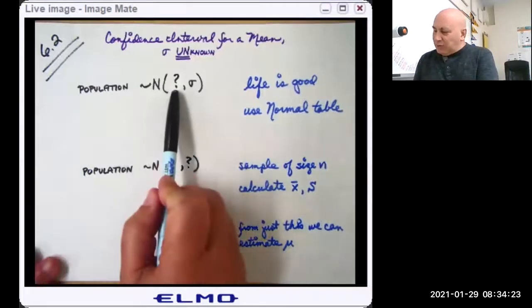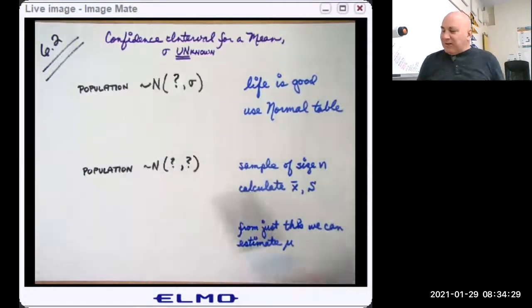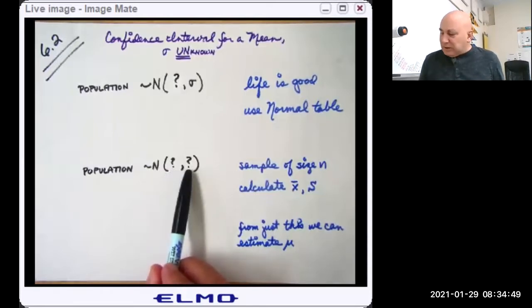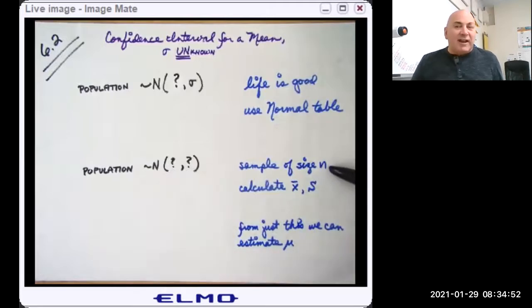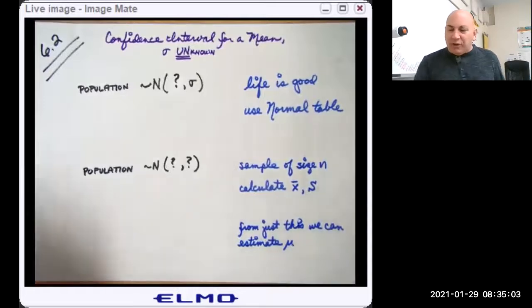Well, if you don't know the mean but you somehow magically know the population sigma, life is good. You can use the normal curve table and use that to get your Z critical value in order to do your margin of error in your confidence interval. But what if you want to know the population mean and you don't know sigma? Well, what we're going to do is take a sample of size little n. We're going to calculate the mean and the standard deviation for that sample, and from that information, we're going to estimate mu.